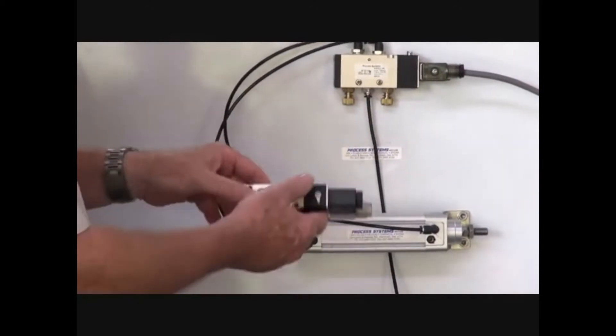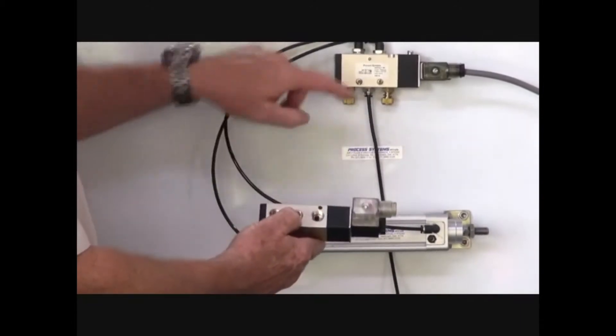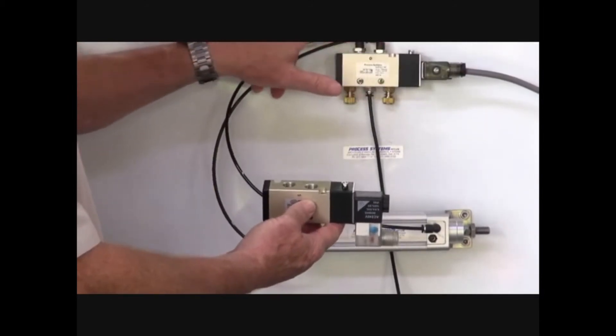Inlet port just there, and two exhaust ports either side, and two cylinder ports. The outlet ports go to your actuator.